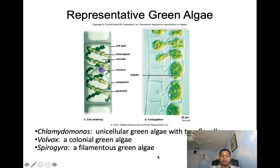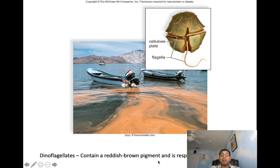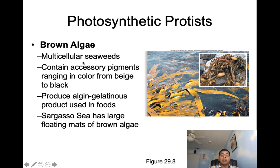We can also appreciate diatoms and dinoflagellates — dinoflagellates contain a reddish-brown pigment and are responsible for red tides. Red algae is mainly multicellular seaweeds containing red and blue pigments as well as chlorophyll, and produces useful gelling agents such as agar and carrageenan. Brown algae includes multicellular seaweeds containing accessory pigments ranging from beige to black, produces algin gelatinous products used in foods, and the Sargasso Sea has large floating mats of brown algae.